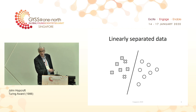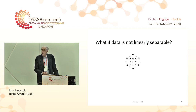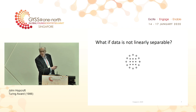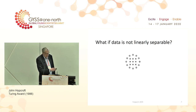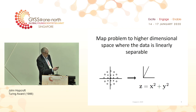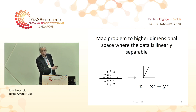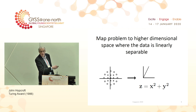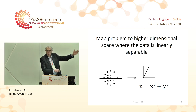If the data is linearly separable, the algorithm will find a hyperplane separating it. But what if the data is not linearly separable? What you might do is map the data to a higher dimensional space. I might add another dimension z, where I pull the data out from the board by an amount proportional to its distance from the origin. The zeros will be pulled out further than the x's, and there will be a hyperplane which separates them.